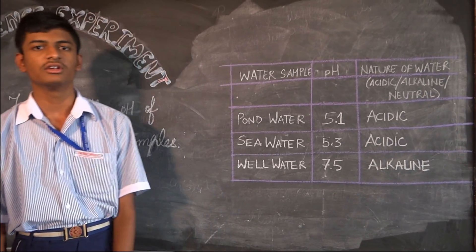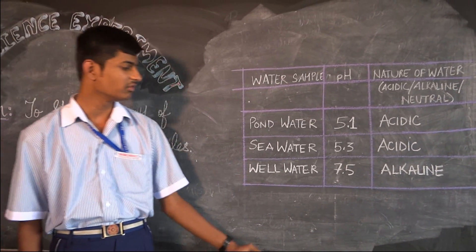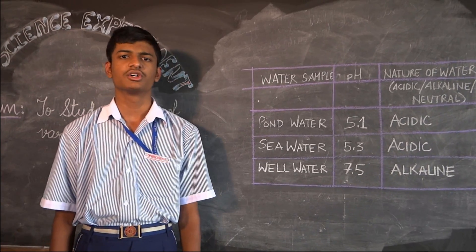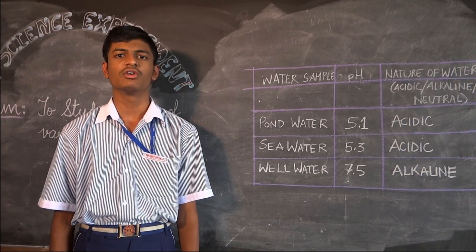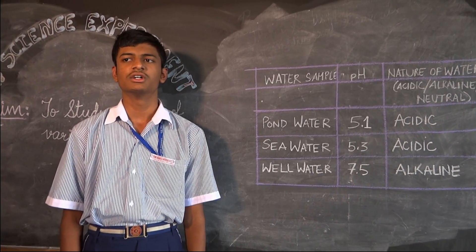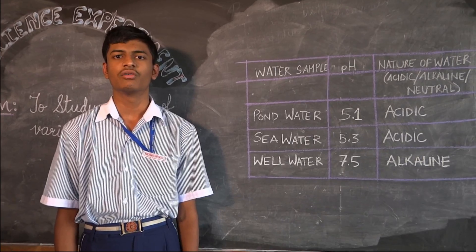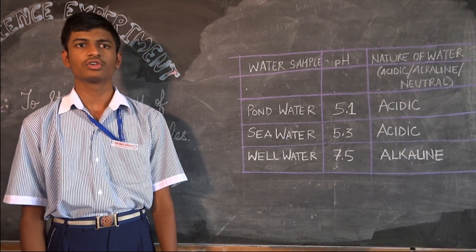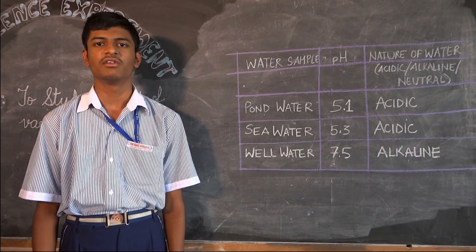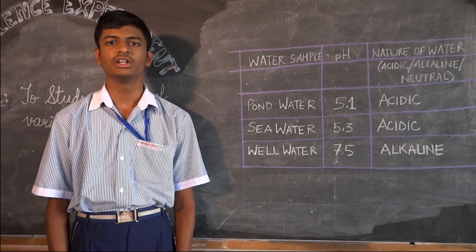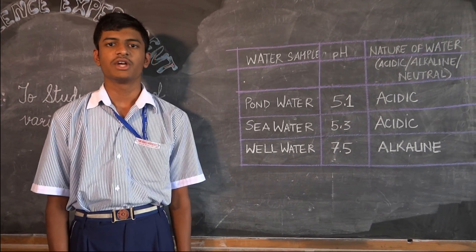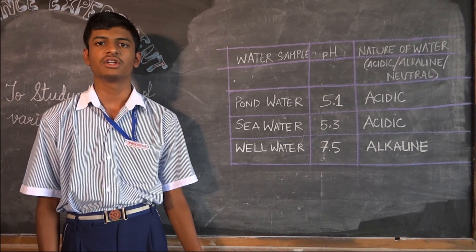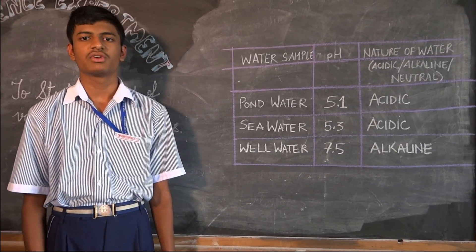The conclusion is that the pH value of water is an indicator of impurities. The pH value of pure water is 7, that is neutral.